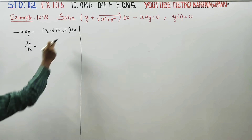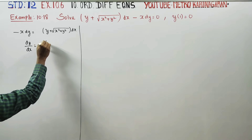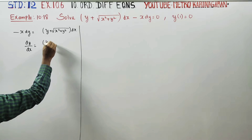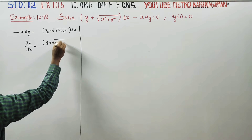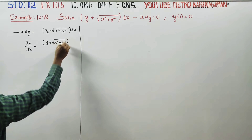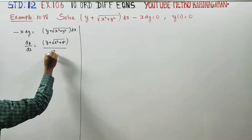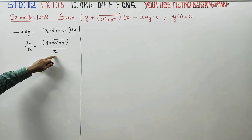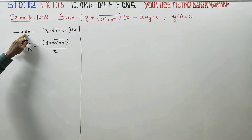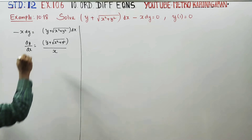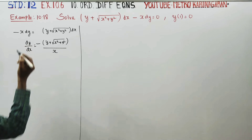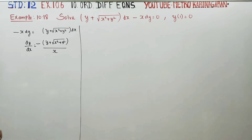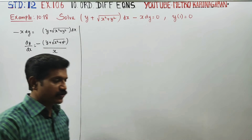z equal to y plus root of x square plus y square by x. This is a homogeneous differential equation.